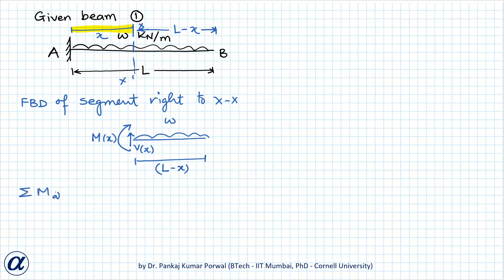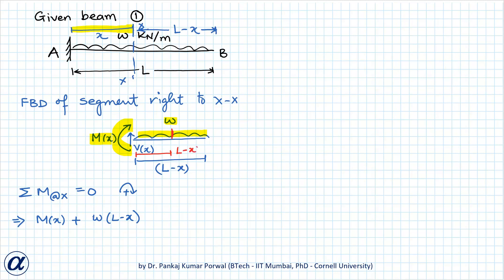Writing the sum of moments about section X-X equals zero, with clockwise moments positive: MX is clockwise, and the moment due to the UDL W over length (L minus X) is also clockwise, with lever arm (L minus X)/2. The shear force VX passes through the point, so its moment is zero. This gives MX = −W(L − X)² / 2.